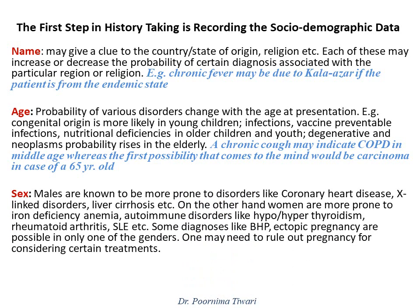Males are known to be more prone to certain disorders like coronary heart disease and X-linked disorders. On the other hand, women are more prone to iron deficiency anemia, autoimmune disorders, and thyroid disorders. Some diseases like benign prostatic hyperplasia and ectopic pregnancy are possible only in one gender. In addition, one may need to ensure that the person is not pregnant to rule out certain disorders or before considering certain treatments, and sometimes the pregnancy itself may explain the symptoms.